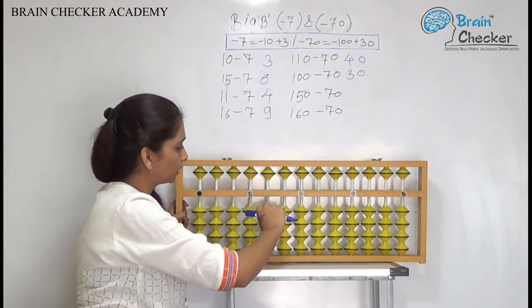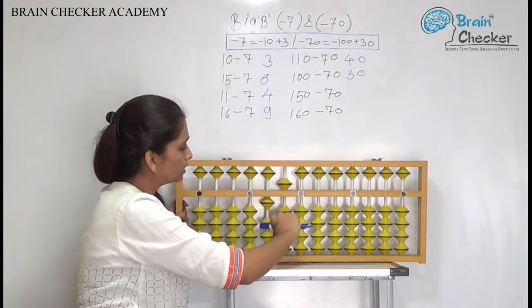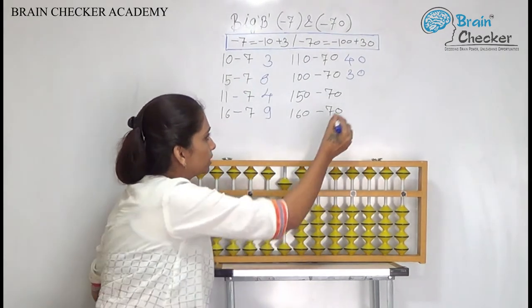Next is 150. So 150 less 70. So add 30 less 100. Answer is 80.